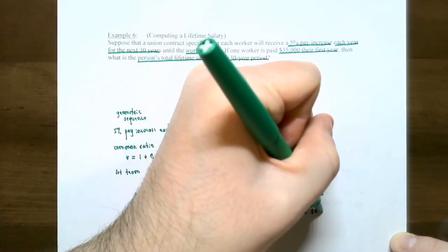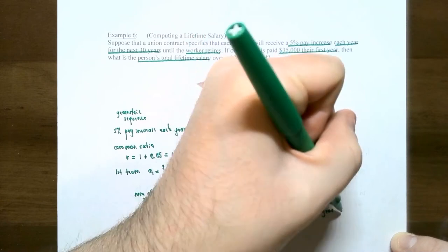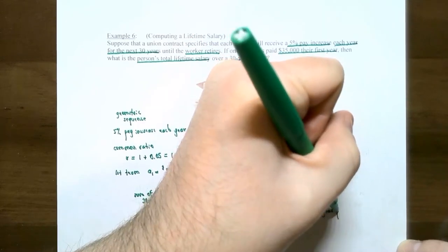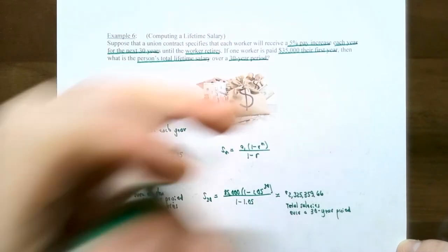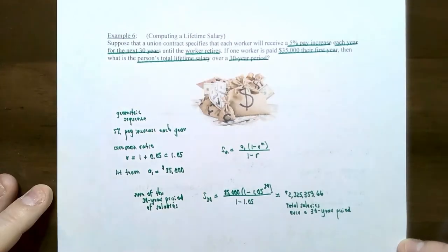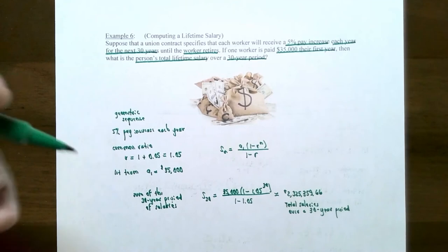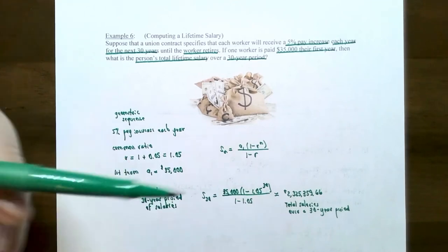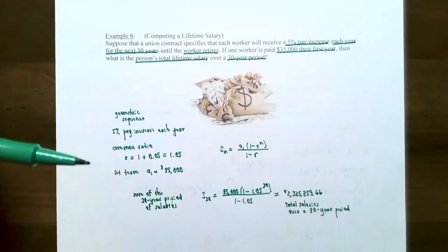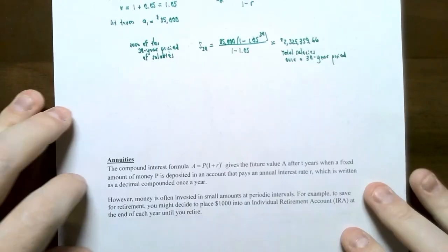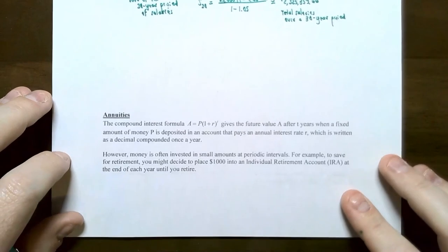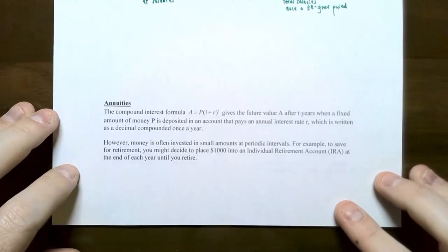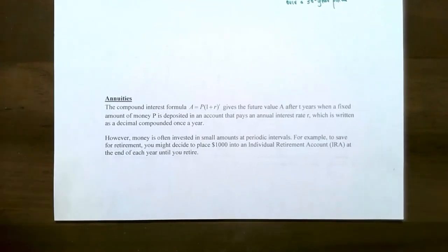When given a 5% increase every year for 30 years, the lifetime salary for this person would be over $2 million. Now let's look at the next idea, which is called annuities. Annuities come up in finance, business, and accounting problems very often.